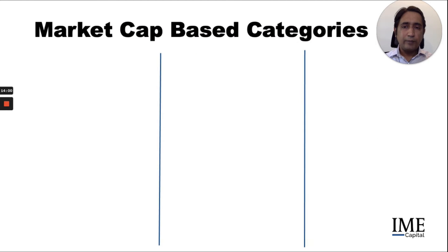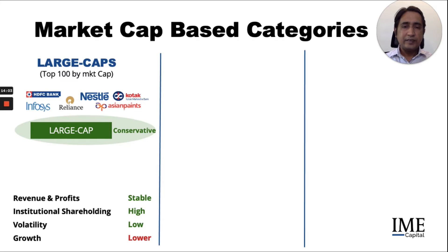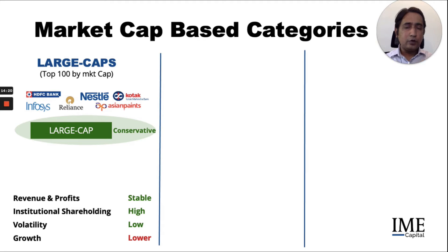Looking at market cap based categories, large cap funds are suitable for conservative investors, primarily because these funds invest in companies where revenues and profits are relatively more stable, have a higher level of institutional shareholding, and have relatively lower volatility, even though growth may be slightly lower.